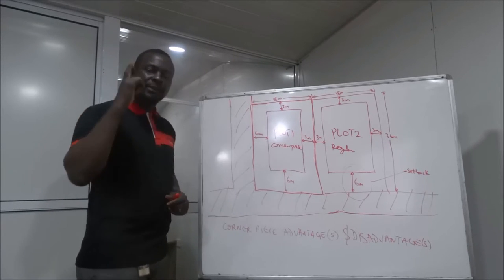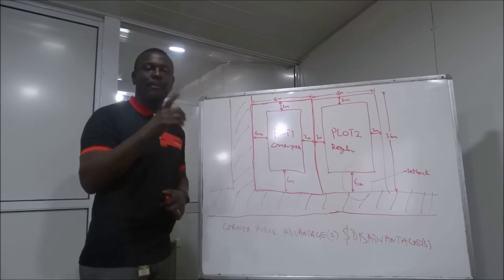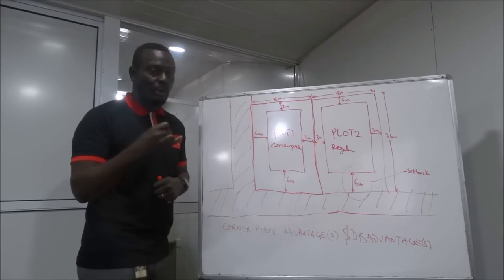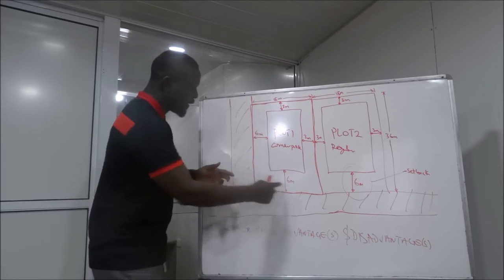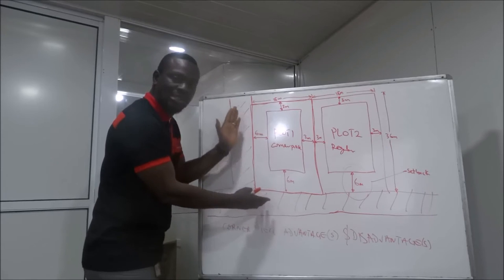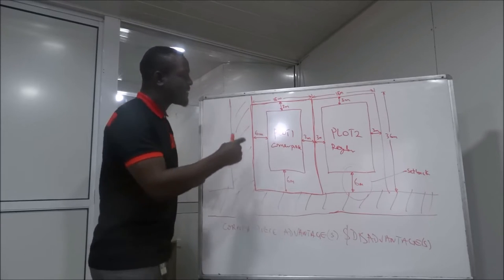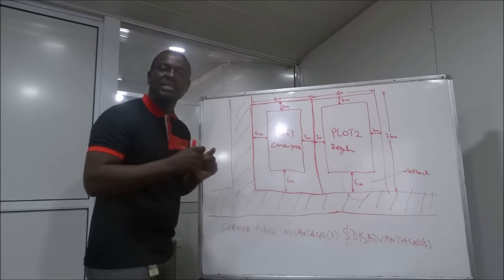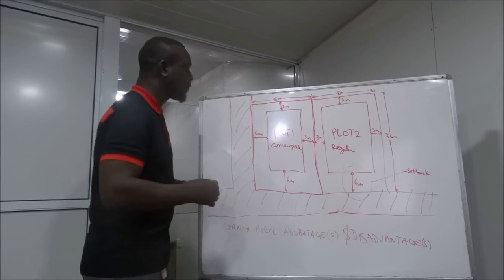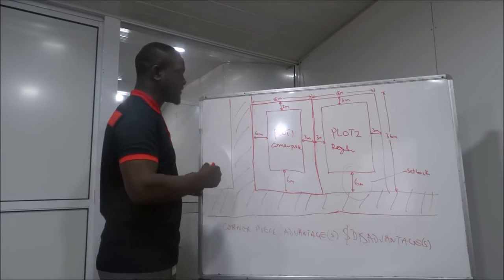One, they think that corner pieces are always bigger. That's number one. Number two, because the fact that it's bordered by road on two sides makes it very interesting in terms of what you can use it for.